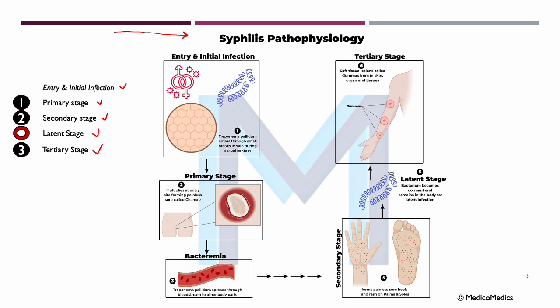Let's take a more detailed look at the pathophysiology of syphilis. It all begins with entry and initial infection — Treponema pallidum enters through small breaks in the skin or mucous membranes, often during sexual contact. We then enter the primary stage with formation of the chancre. The bacteria multiply at the entry site, forming this painless sore called a chancre. This sore heals on its own, but it signals an active infection. The bacterium then spreads via the bloodstream to other parts of the body, leading to systemic symptoms.